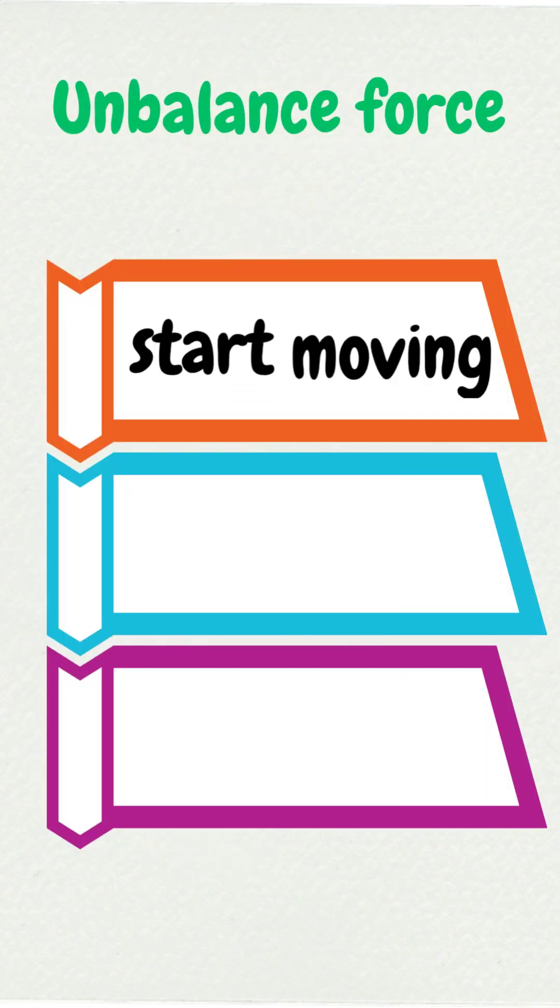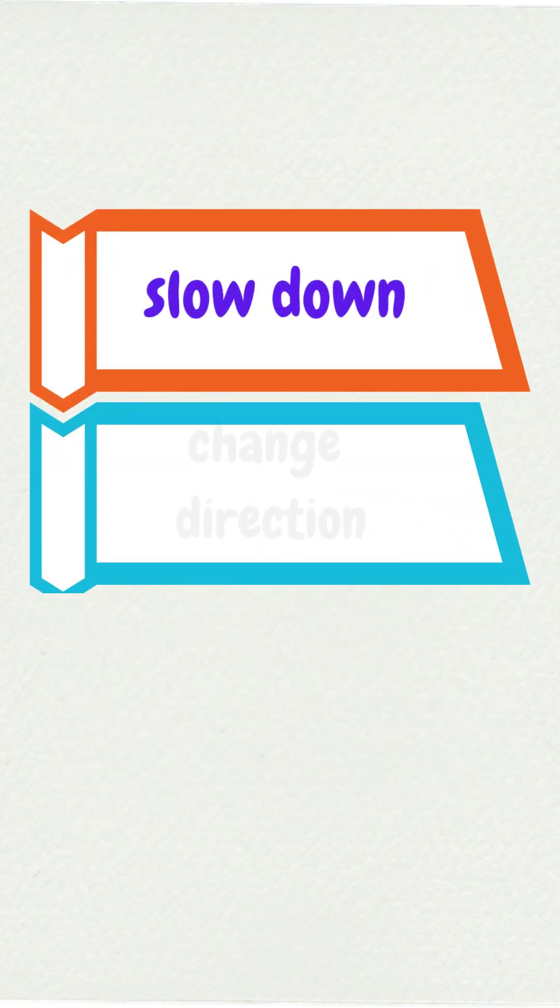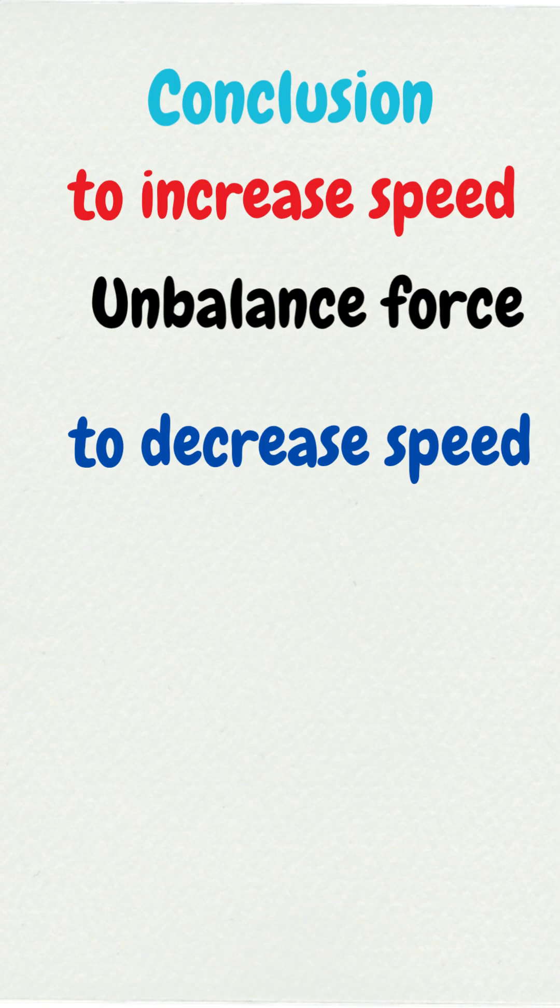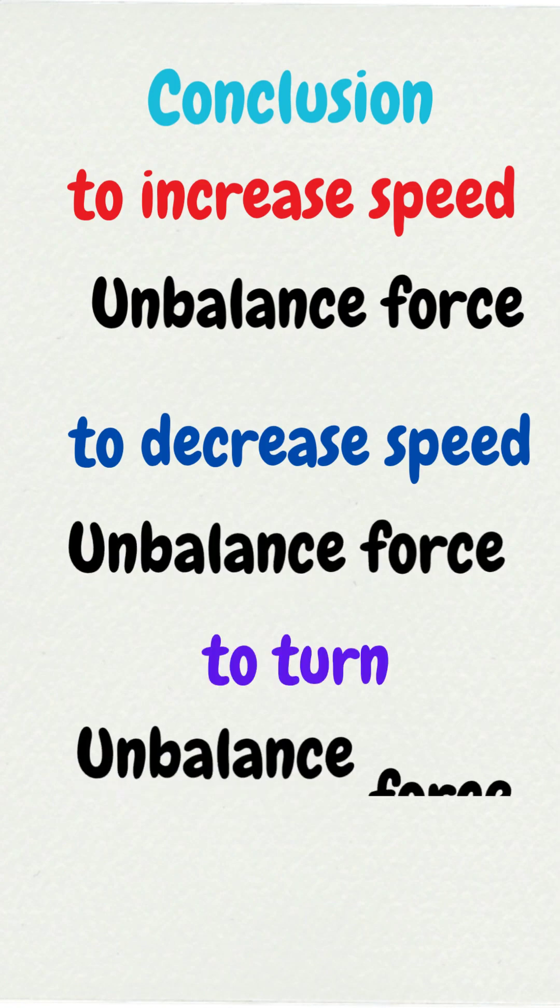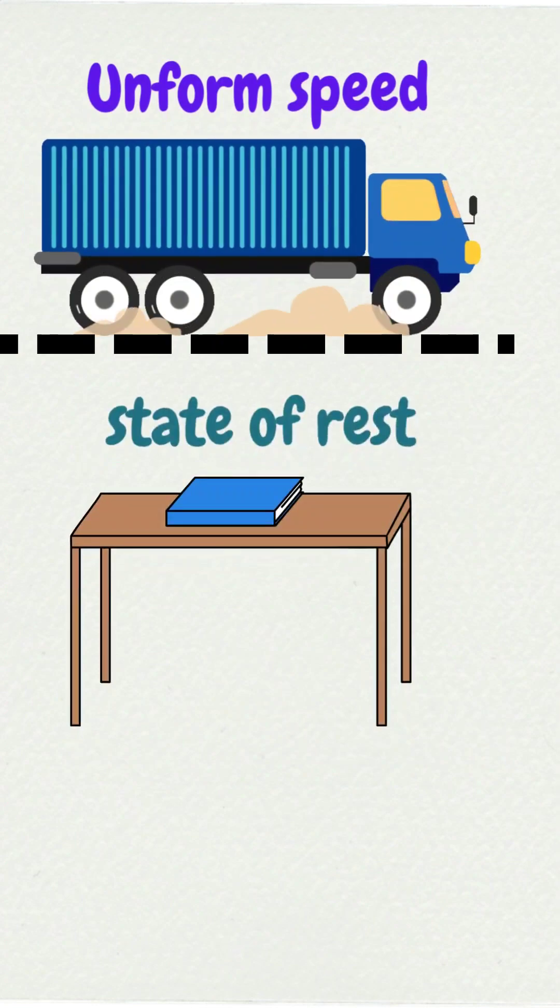It can make an object start moving, stop moving, speed up, slow down, or change direction. Conclusion: To increase speed, unbalanced force. To decrease speed, unbalanced force. To turn, unbalanced force. To move at uniform speed or state of rest, balanced force.